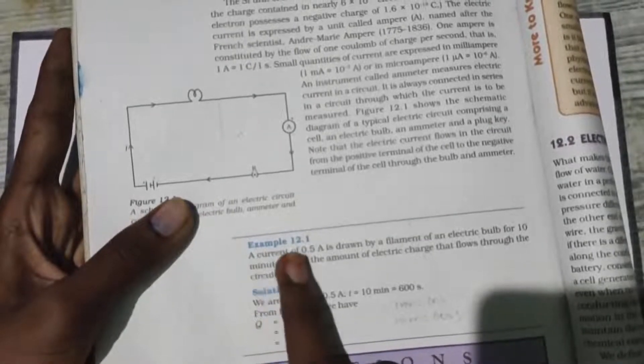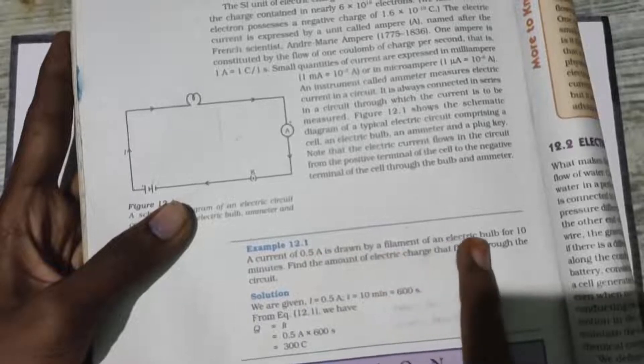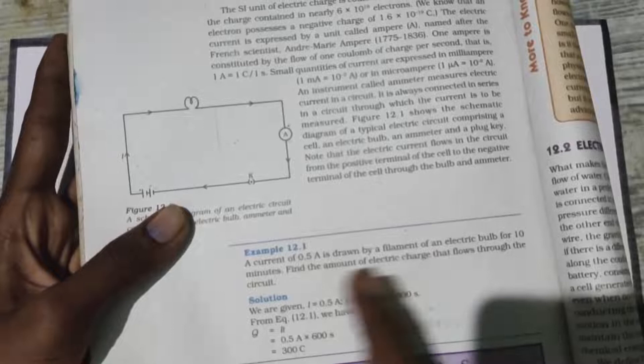First question: a current of 0.5A is drawn by a filament of an electric bulb for 10 minutes. Find the amount of electric charge that flows through the circuit.